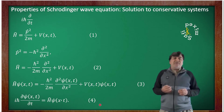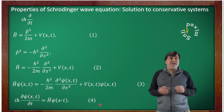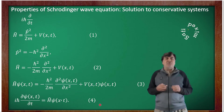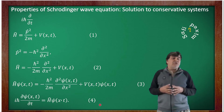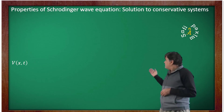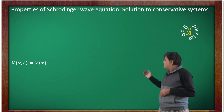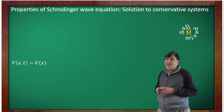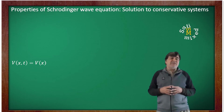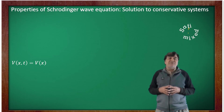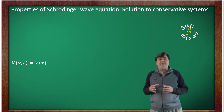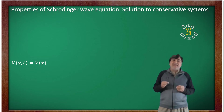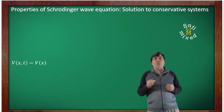Now a very important characteristic: if the Hamiltonian operator H is not explicitly time dependent — in other words, if the potential V as a function of x and t is in fact only a function of x and can be written as V(x) — then such a system is called a conservative system. For a conservative system, the wave function can be factorized.